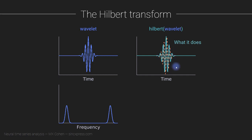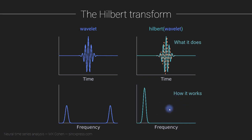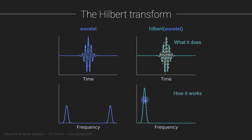So why does this happen and how does the Hilbert transform work? The way the Hilbert transform is implemented in computers is often something like this. The mechanism is: take the FFT of the signal to go into the frequency domain, zero out all of the negative frequencies, double the amplitudes of the positive frequencies, and then take the inverse Fourier transform. So what happens when you do that? You go from a real-valued signal into the frequency domain, obliterate the negative frequencies, double the amplitudes of the positive frequencies, and then take the inverse Fourier transform — that ends up giving us a complex-valued signal.